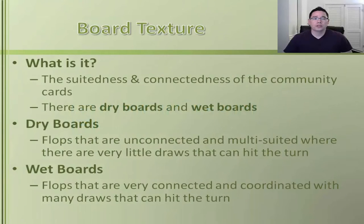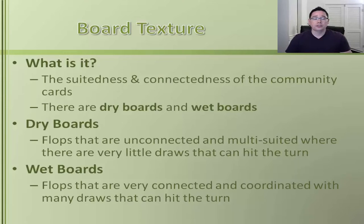In this video we're going to talk about a very important concept called board texture, because it plays a very important role in post-flop play. Board texture refers to the suitedness and connectedness of the community cards — the cards on the flop, the turn, and the river. There are two types of board textures we need to understand: dry boards and wet boards.